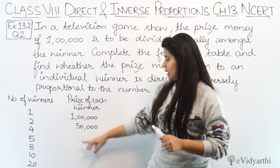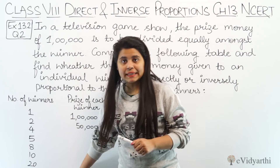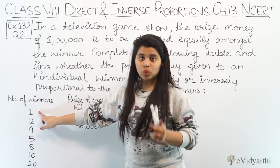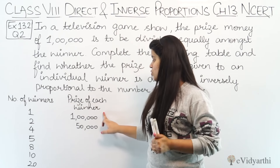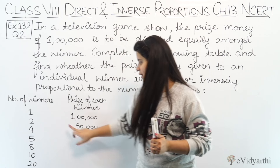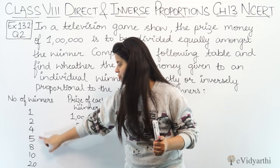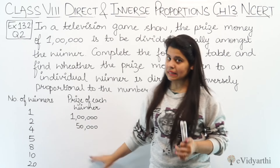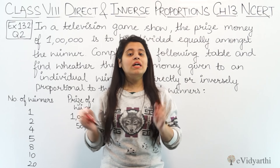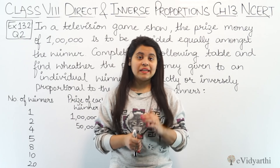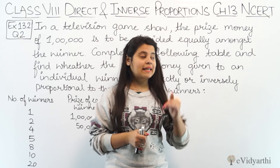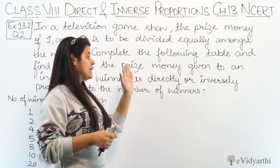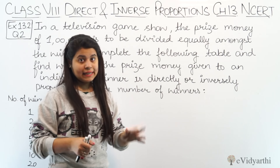Now, hume yahan pe ye table complete karna hai. Jaise likha hai, agar number of winners 1 hai to prize money itna, 2 hai to itna, 4, 5, 8 and so on — iska kitna hoga? And then hume ye batana hai ki ye directly proportional hai ya inversely proportional.